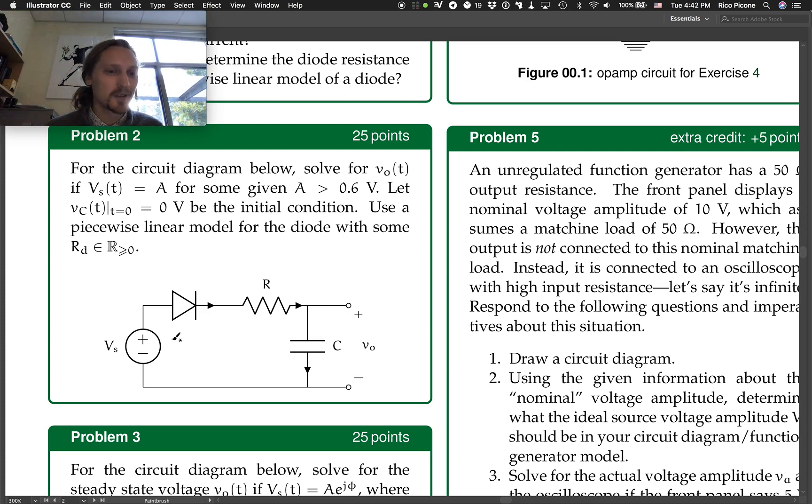So A is some voltage input, some constant voltage. It was greater than 0.6 volts, so the voltage will drop across this diode, and we'll definitely get some current flowing here.